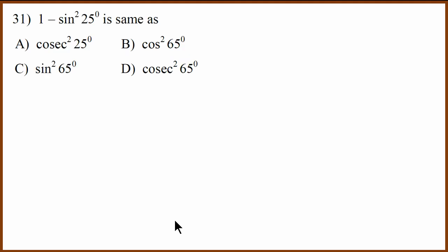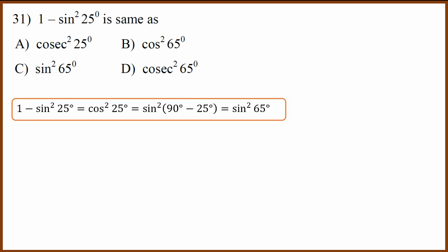This is an interesting question. It is a combination of identity and complementary angle question. So using identity, 1 minus sin square theta is cos square theta. So we get cos square 25 but we know that cos theta equals sin 90 minus theta. So this is equal to sin square 90 minus 25 which is equal to sin square 65. So correct answer is C.